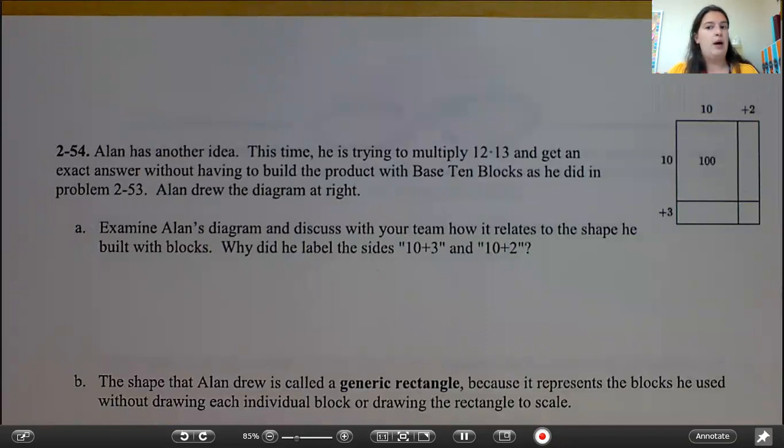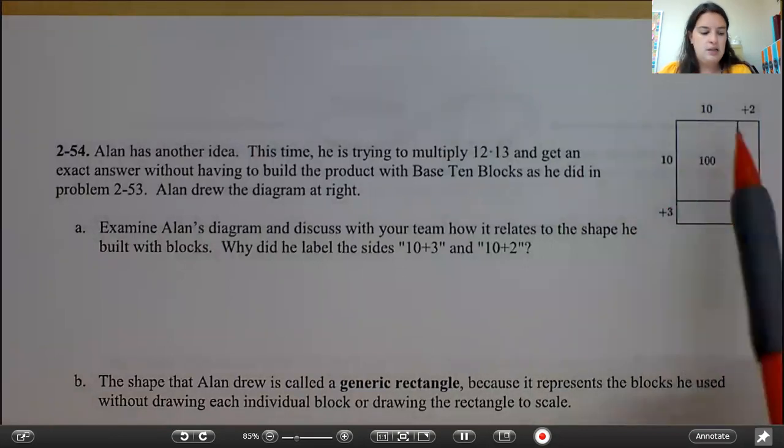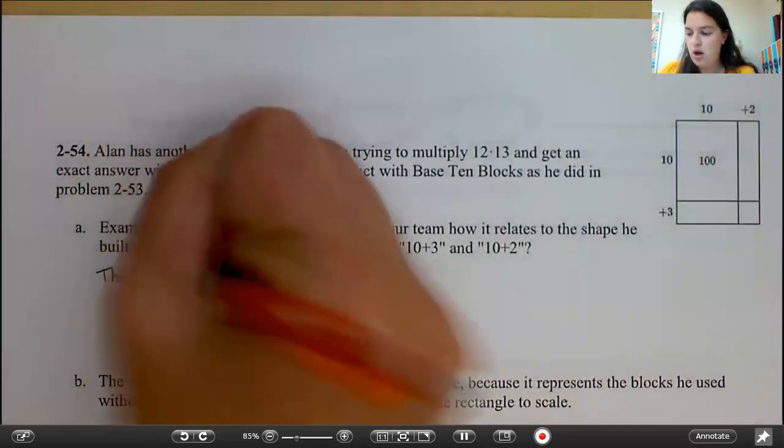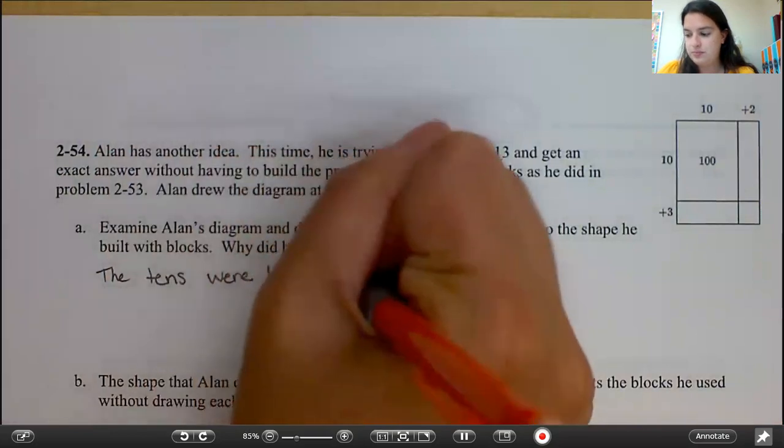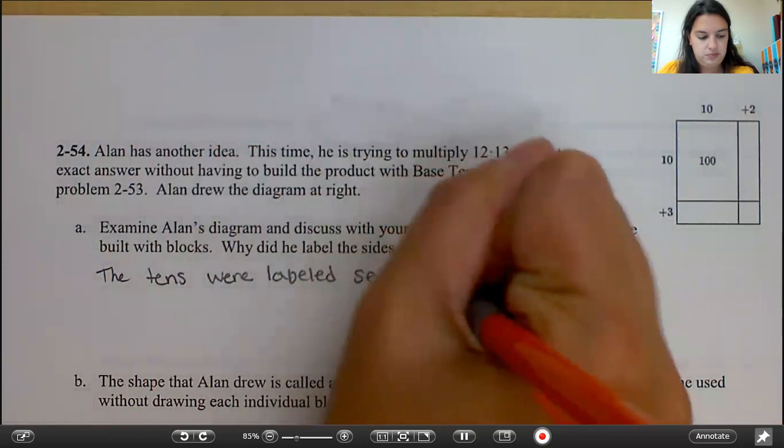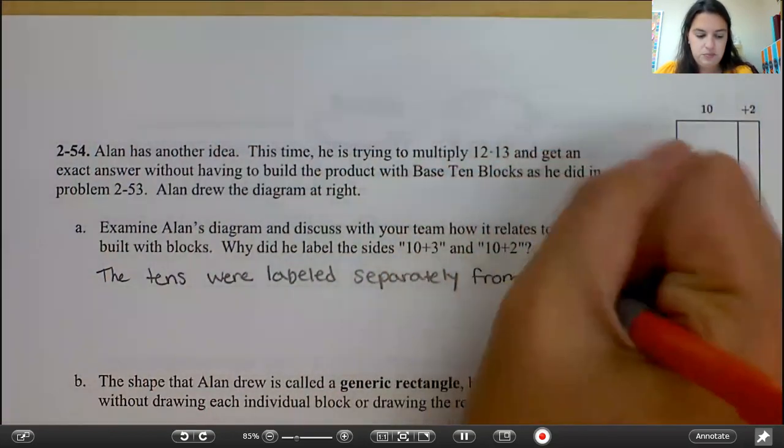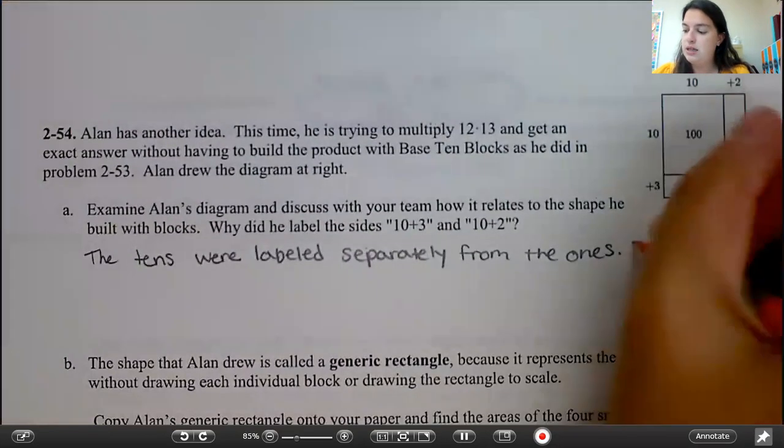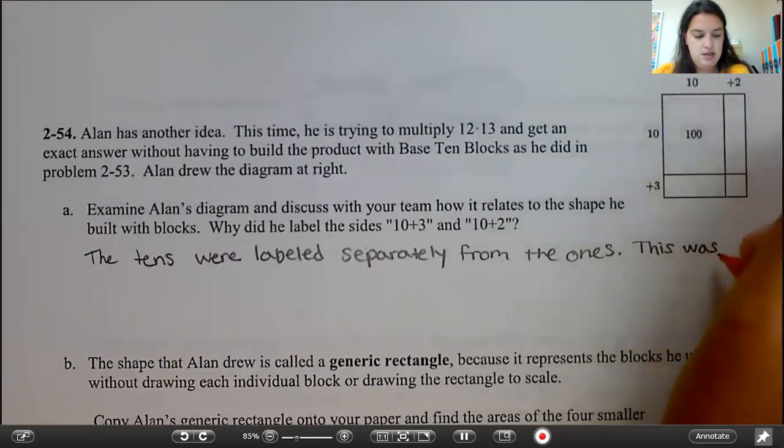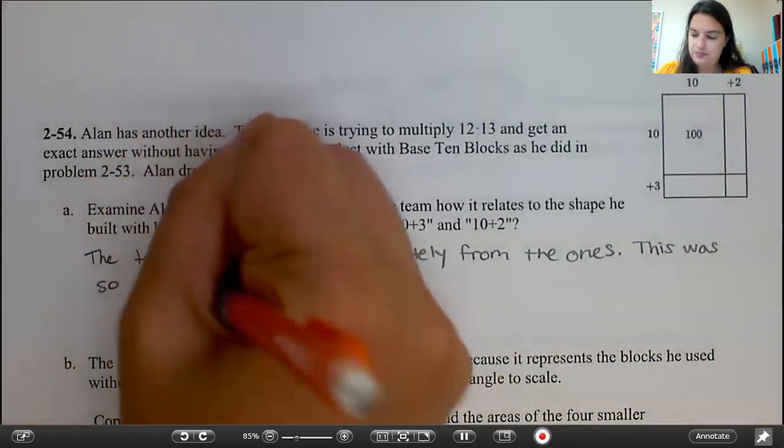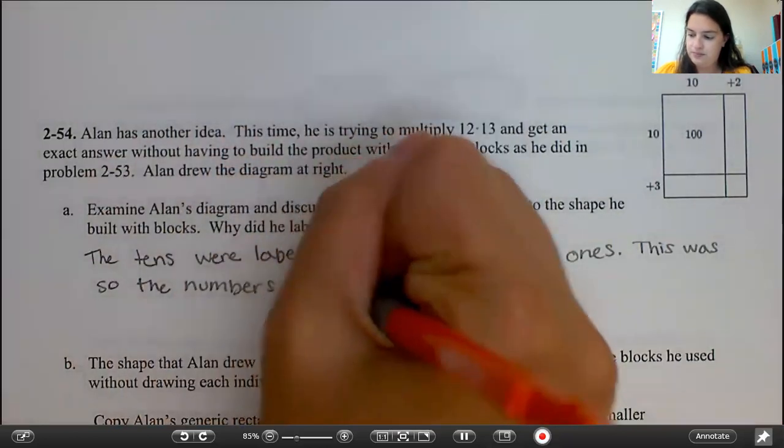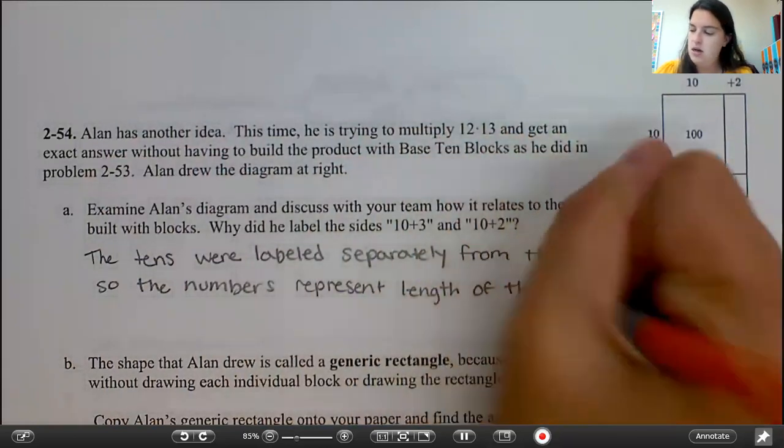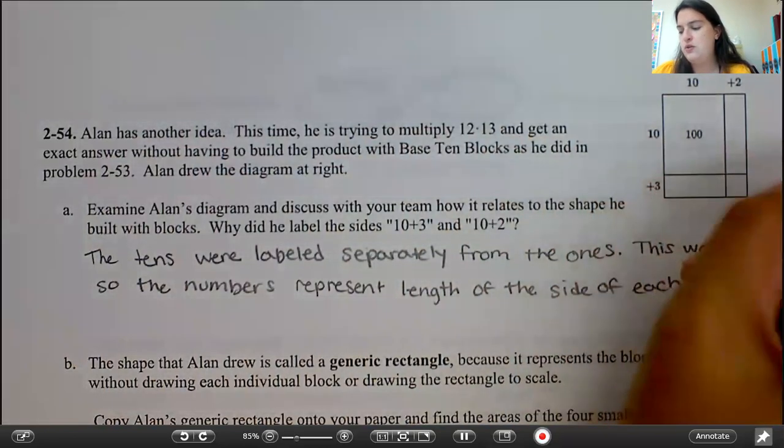Okay, if you're back with me, we're going to talk about why he did what he did. So we labeled this 10 plus 3 and 10 plus 2 because the tens were labeled separately from the ones. So that's kind of confusing, so let's break that down a little bit.